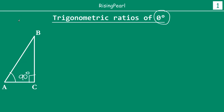Now let's say you have any angle. How do we make this angle zero degrees? Well, one way to do that is to keep one arm fixed and bring the other arm down till the two points coincide.